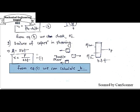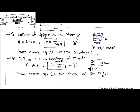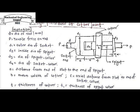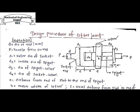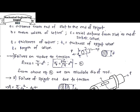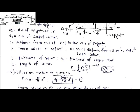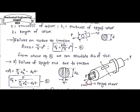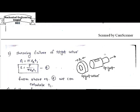This is the basic design procedure of a cotter joint, through which we can calculate different dimensions of the cotter joint. I hope you understand the basic concept. In upcoming videos I will discuss case studies of the cotter joint and knuckle joint. If you have any doubts, please comment below. Don't forget to subscribe to my channel and press the bell icon for further notifications. Thank you.